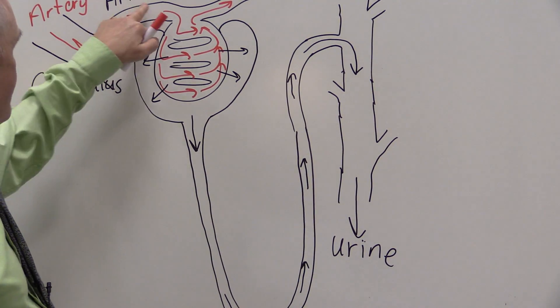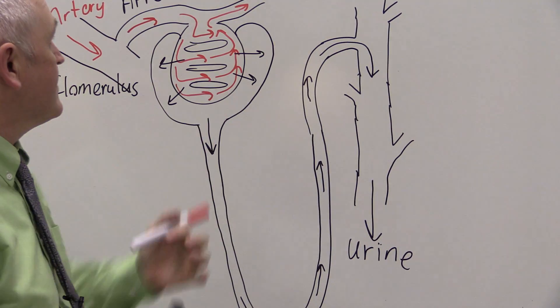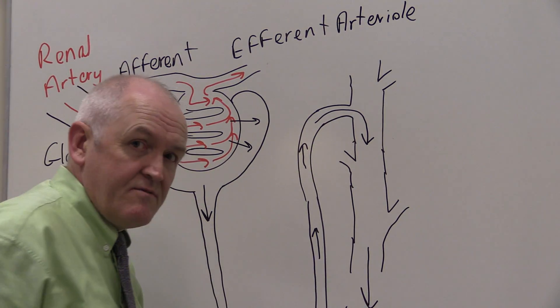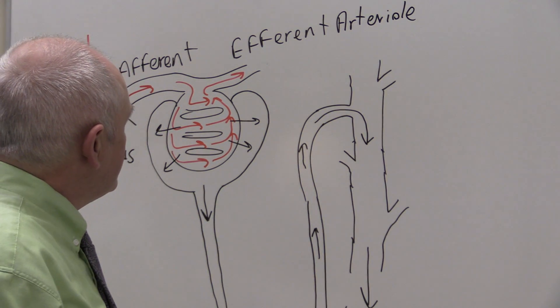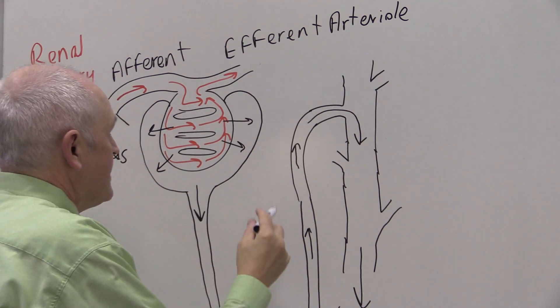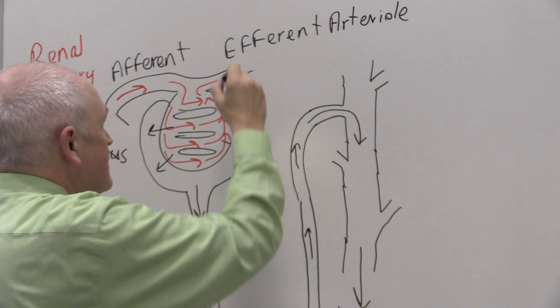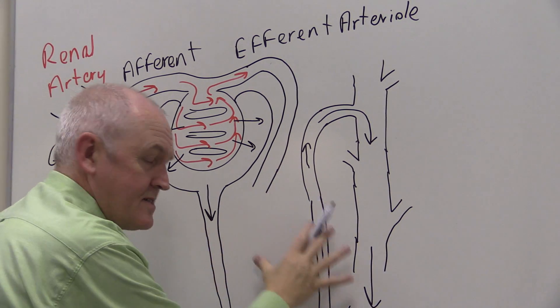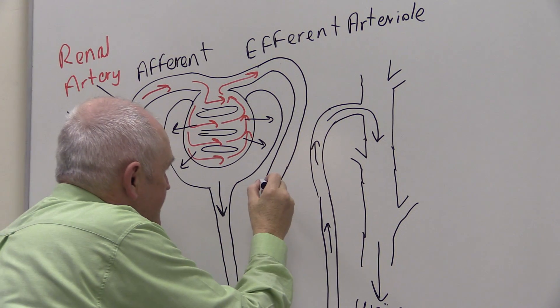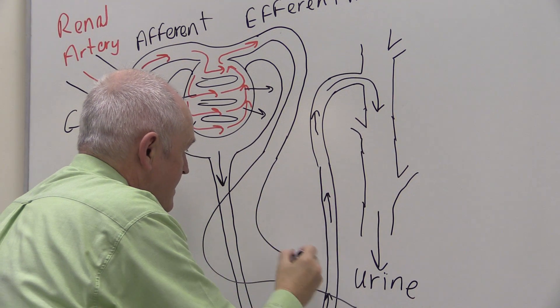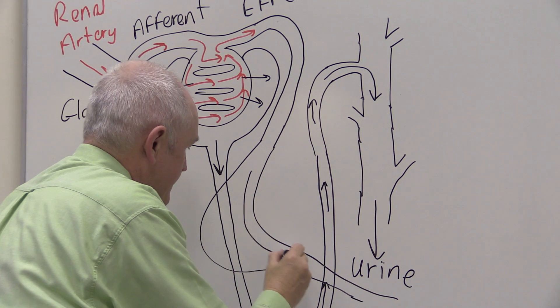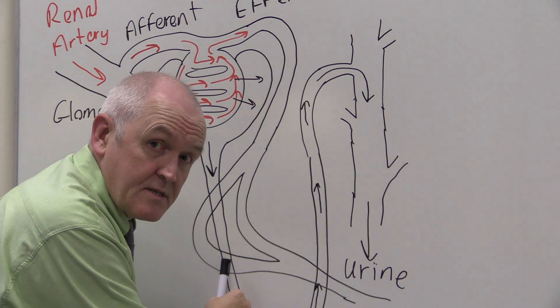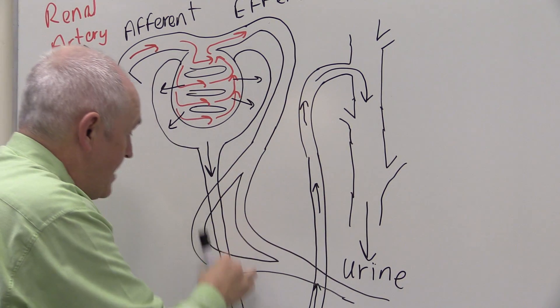Now, we notice that there's an afferent arteriole and an efferent arteriole. That's an efferent arteriole, it's not a venule. And the reason it's called an arteriole is what happens, in essence, is that this arteriole leaves the glomerulus. The arteriole goes down to the nephron and breaks into a large series of capillaries. I'll just draw a couple of capillaries here. These are called the peritubular capillaries because they wrap around the tubule.